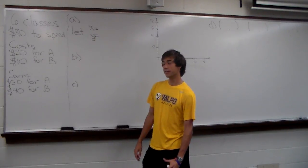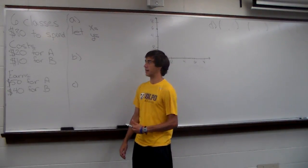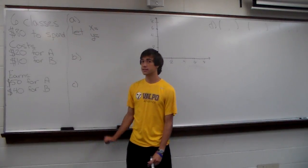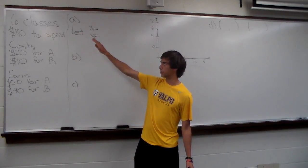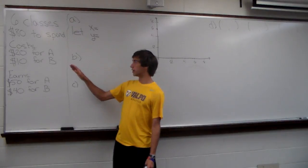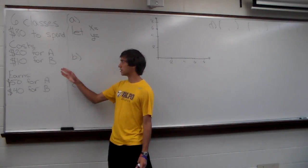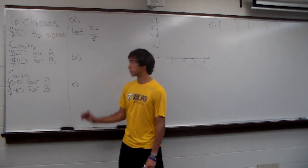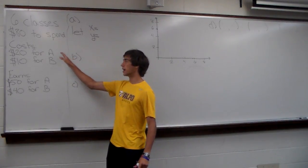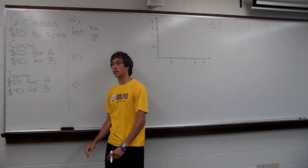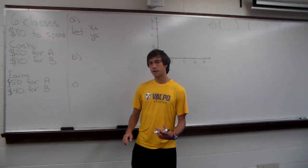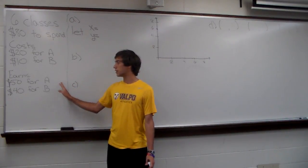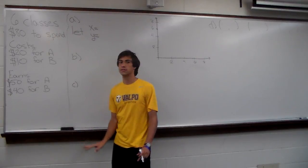This problem is about Henry and the classes he's taking. Henry is currently taking six classes and has $80 to spend on tutors. It will cost Henry $20 to get an A and $10 to get a B in each of his classes. Henry's parents tell him that for every A he gets he'll earn $50, and for every B he gets he'll earn $40.